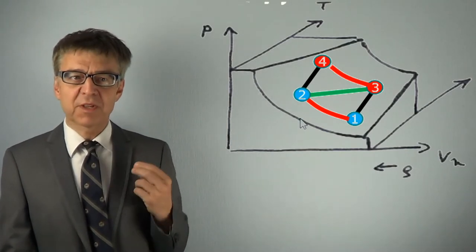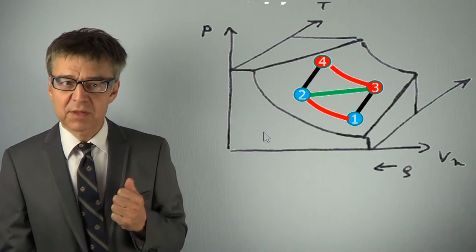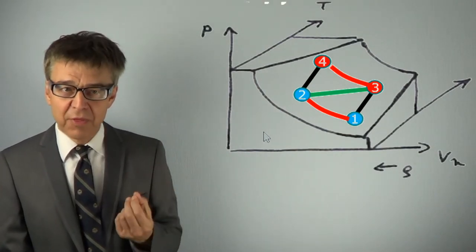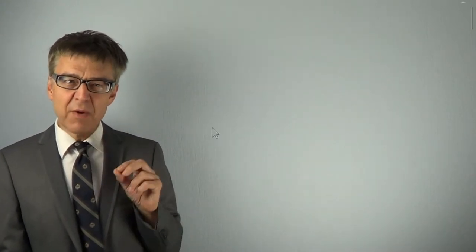Specification of the path is often given by the state variable which is held constant during the process. We speak of an isothermic or an isobaric path. But there is another very important specification of the path from the initial state to the final state.